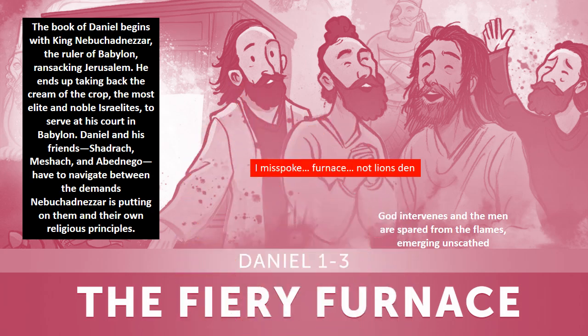The book of Daniel begins with King Nebuchadnezzar, ruler of Babylon, ransacking Jerusalem and taking back the cream of the crop — 10,000 of the best and brightest, the most elite and noble Israelites, to serve in his court. Daniel and his friends — you know the story about Shadrach, Meshach, and Abednego — had to navigate between the demands of Nebuchadnezzar and their own religious principles, including religious holidays, feasts, the Sabbath, and dietary restrictions.